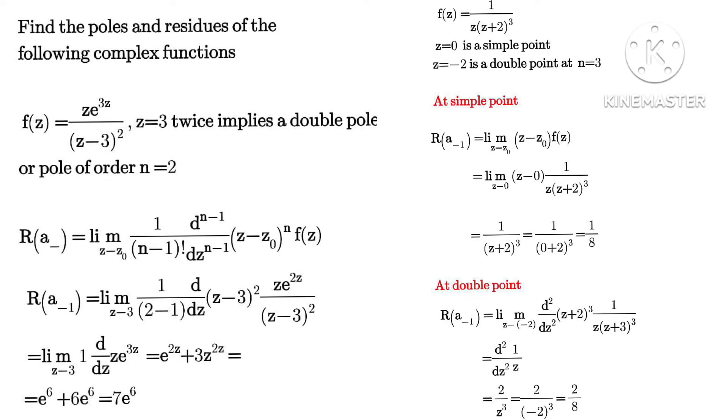So R_(a,-1) is signifying a residue, while z equals to a number is representing our pole. Do you understand? Now we use the same formula again and we arrive at the final answer as 2 over...